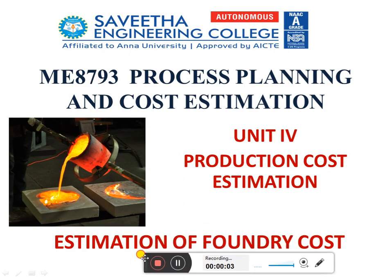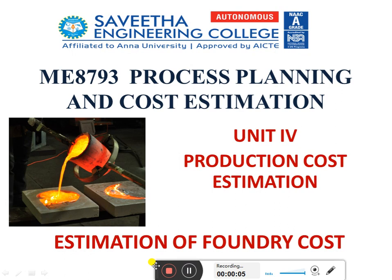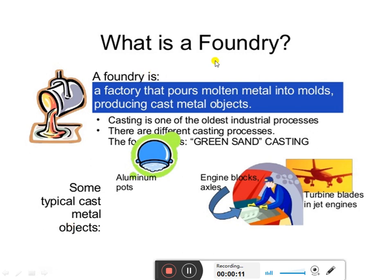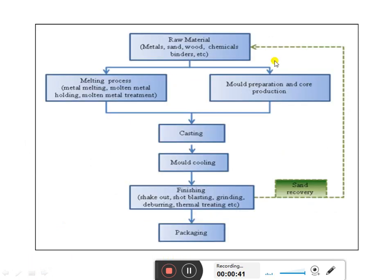Welcome. In this session we are going to discuss estimation of a foundry cast. A foundry is a factory that pours molten metal into molds, producing cast metal objects. Casting is one of the oldest industrial processes. Typical cast metals include engine blocks, axles, turbine blades in jet engines, and aluminium parts.